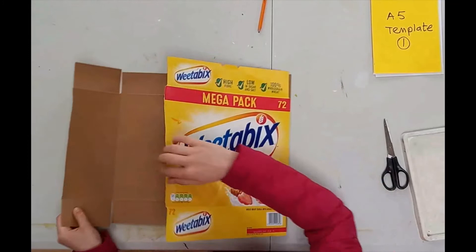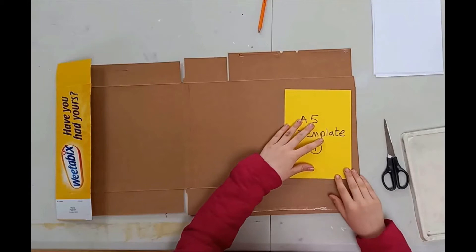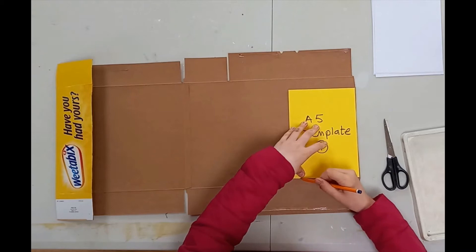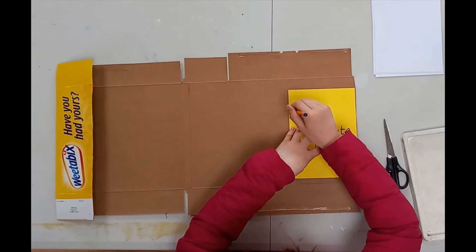We're now going to do our three paintings on cardboard. If each child brings in two of the same cereal boxes and cuts out three A5 pieces using an A5 template, it doesn't have to be perfect.